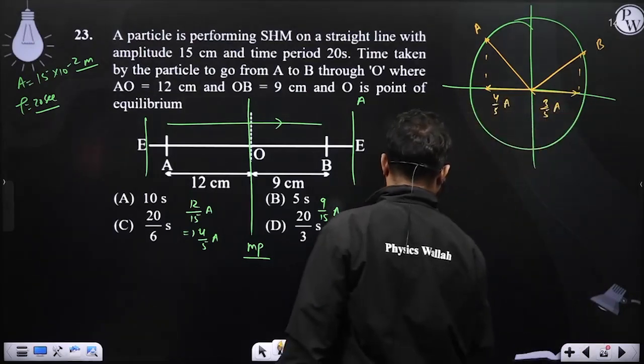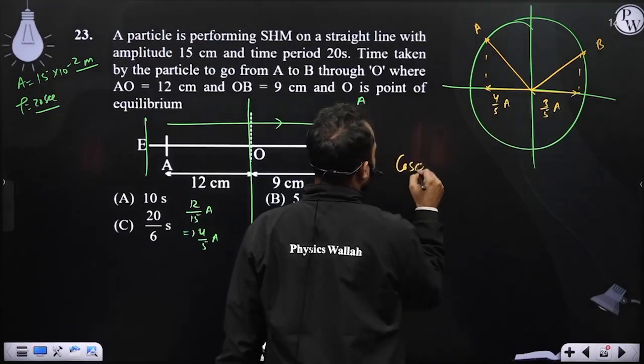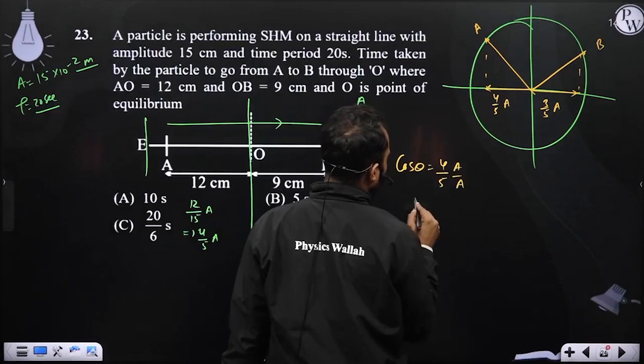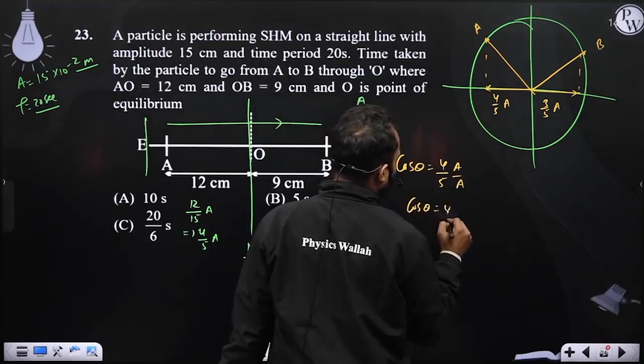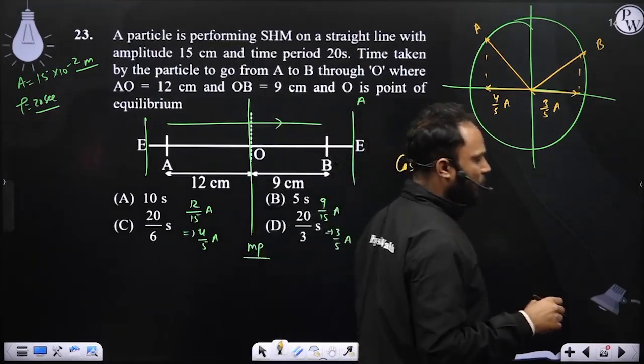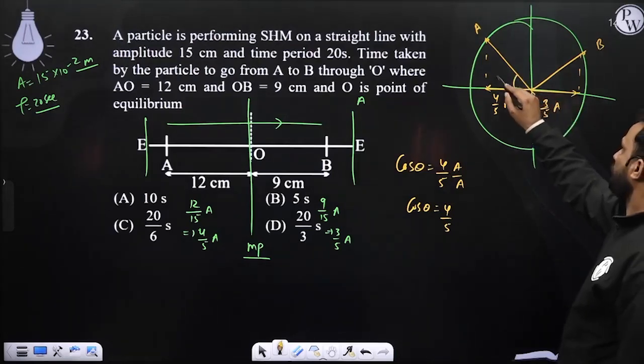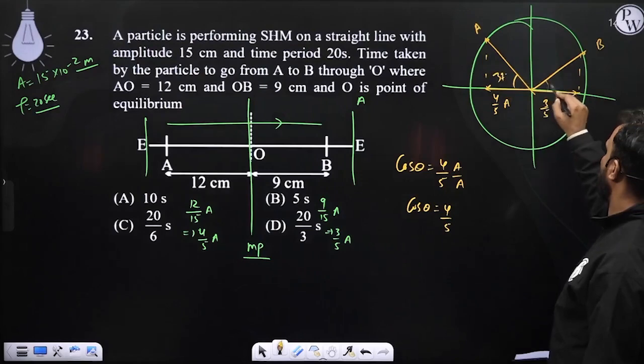If it is 4 by 5 A, then we can say cos theta is nothing but 4 by 5 A by A, means cos theta is nothing but 4 by 5. If the cos theta is 4 by 5, means cos theta is base upon hypotenuse 4 by 5, then this angle will be 37 degree angle. Similarly this will be 53 degree.